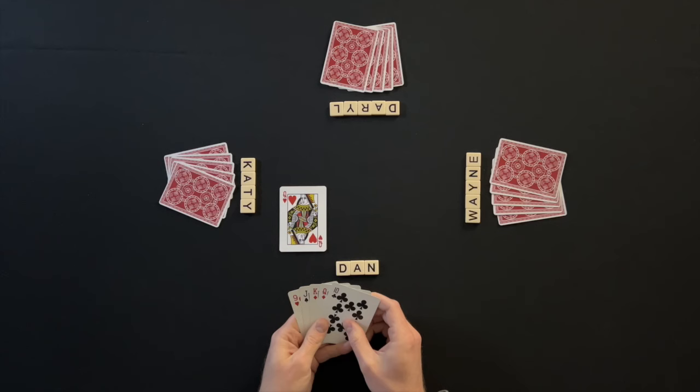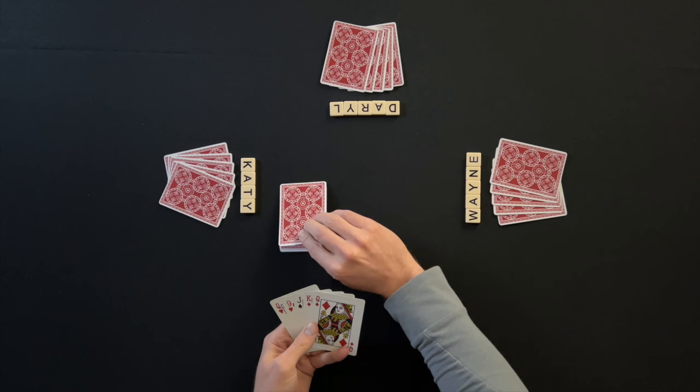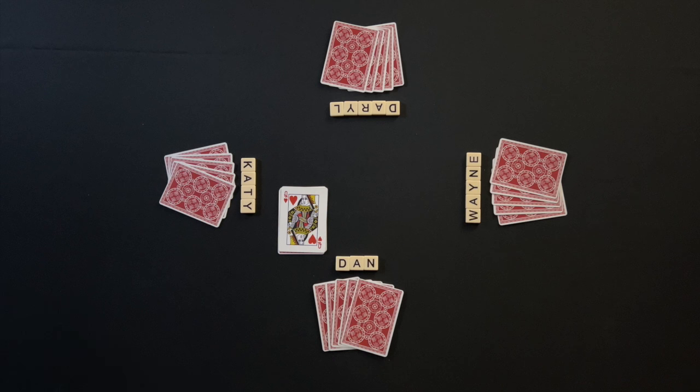A player can call the flipped up card as the Trump Suit or all players will pass on the first flipped up card. If the flipped card is called as Trump by any player, the dealer will pick up the flipped up card and place it in their hand. Then the dealer will discard any card from their hand face down.